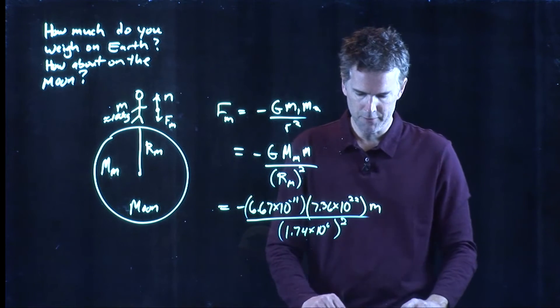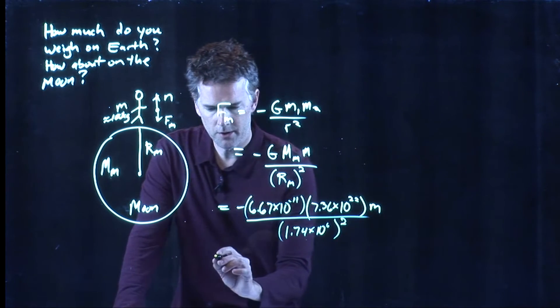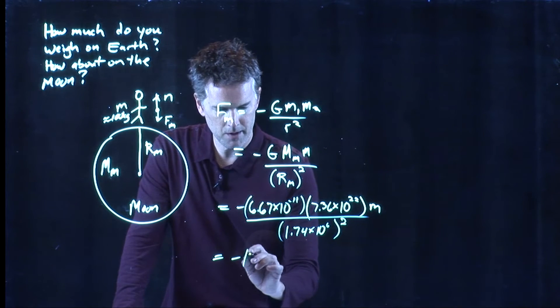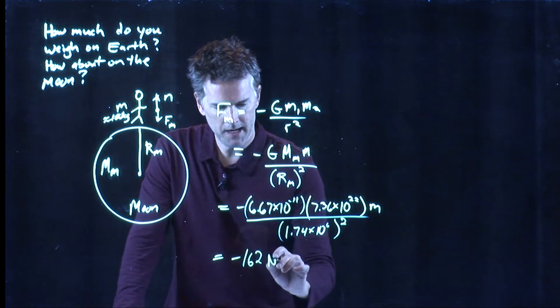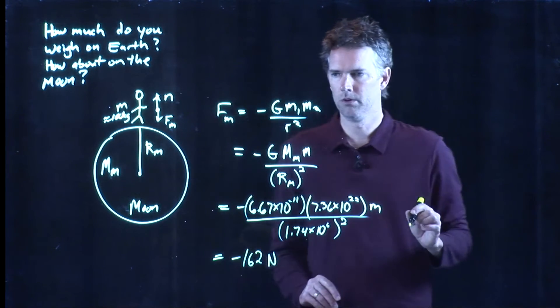The radius of the Moon is 1.74 times 10 to the 6 meters. And if you punch in all those numbers into your calculator, you should get something around negative 162 newtons.